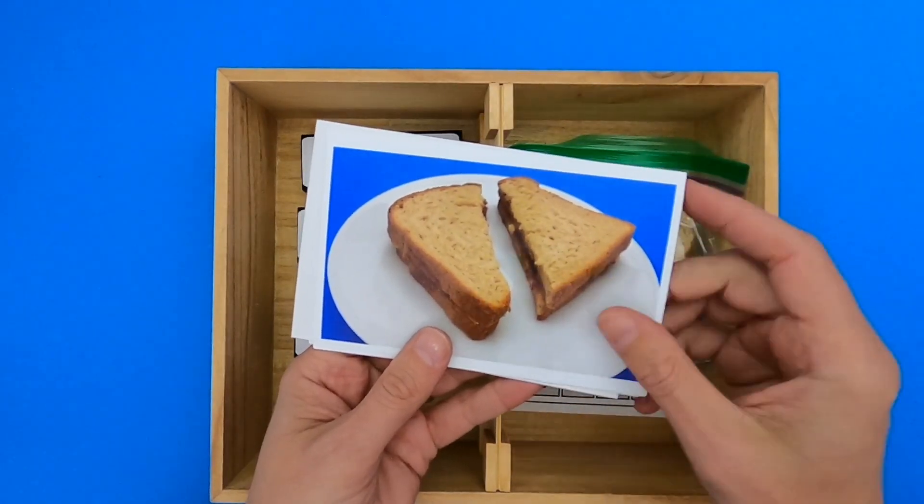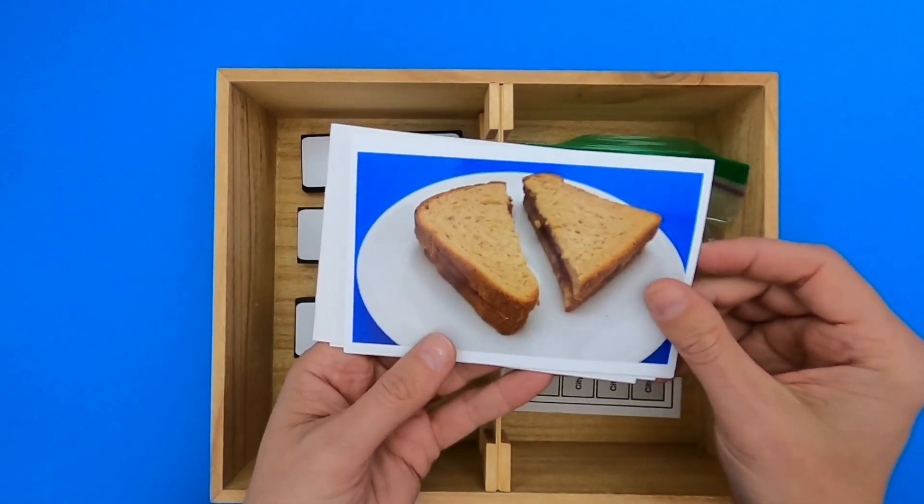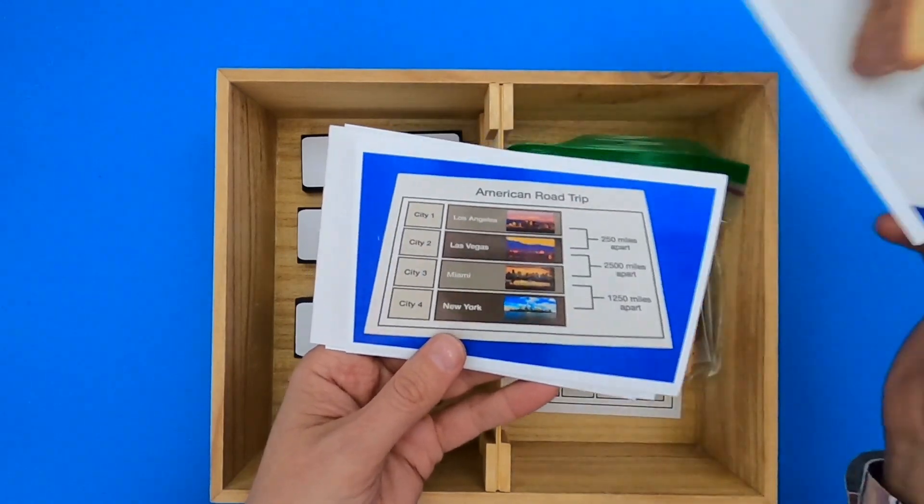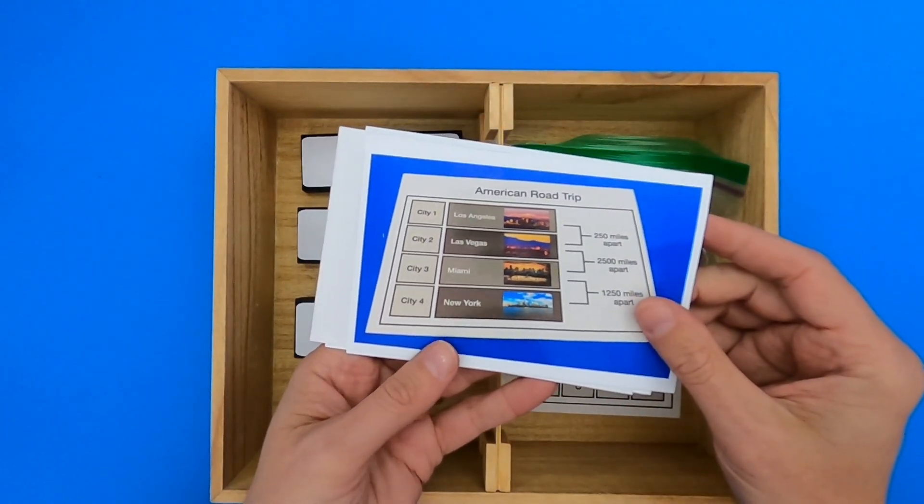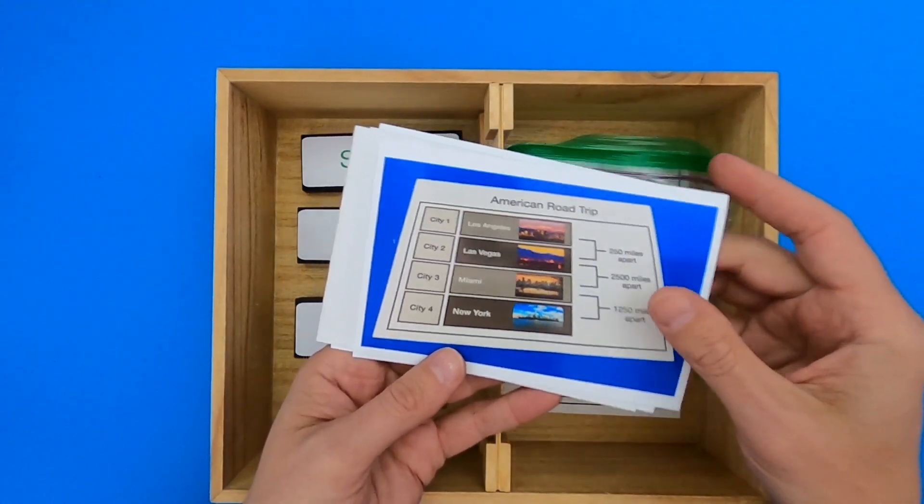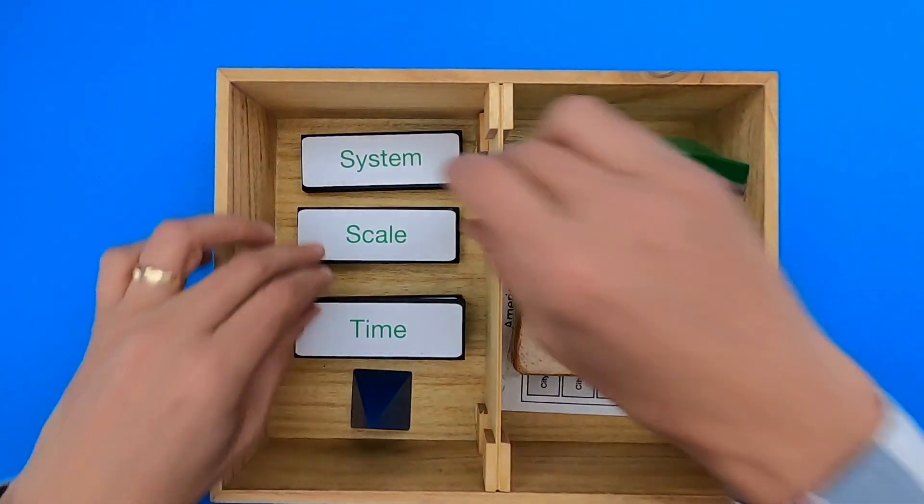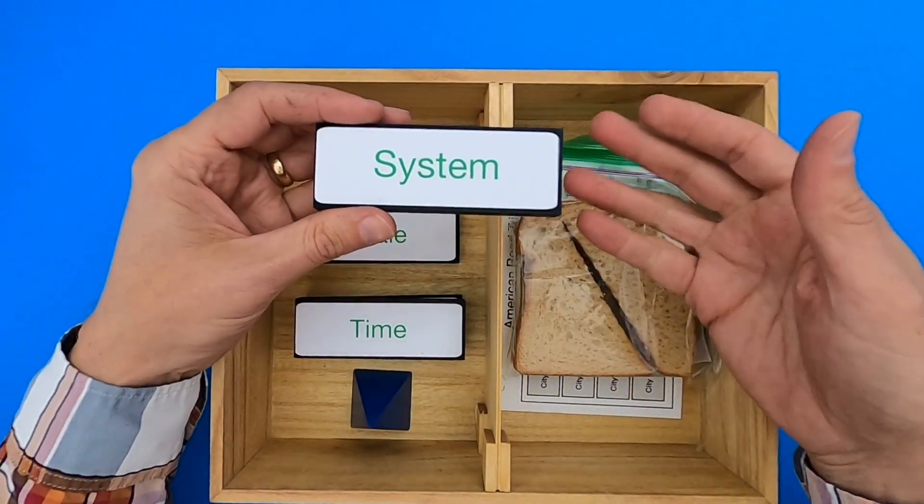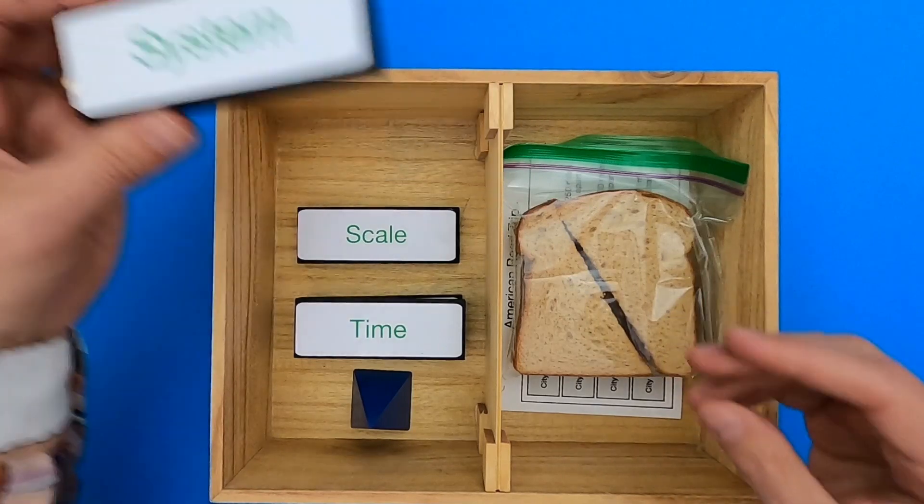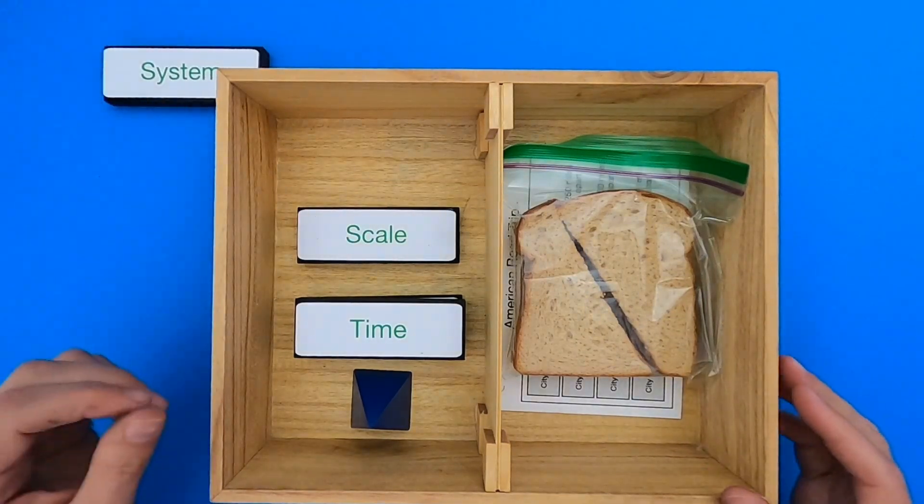I'm going to start by showing you a time scale model of the processes in the creation of a sandwich and then I'll give you a chance to work on your own spatial model of an American road trip. The first thing you want to do before you create a spatial model or a time model is define what system are we investigating.